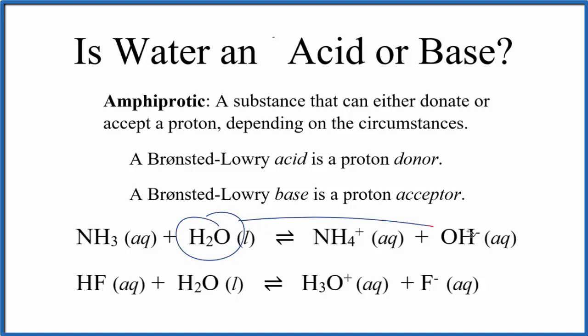We end up with OH-, the hydroxide ion. It lost a proton - it donated a proton. The NH3 is now NH4+, so it got that proton. Water here is donating a proton, which means water is acting as an acid in this first equation.